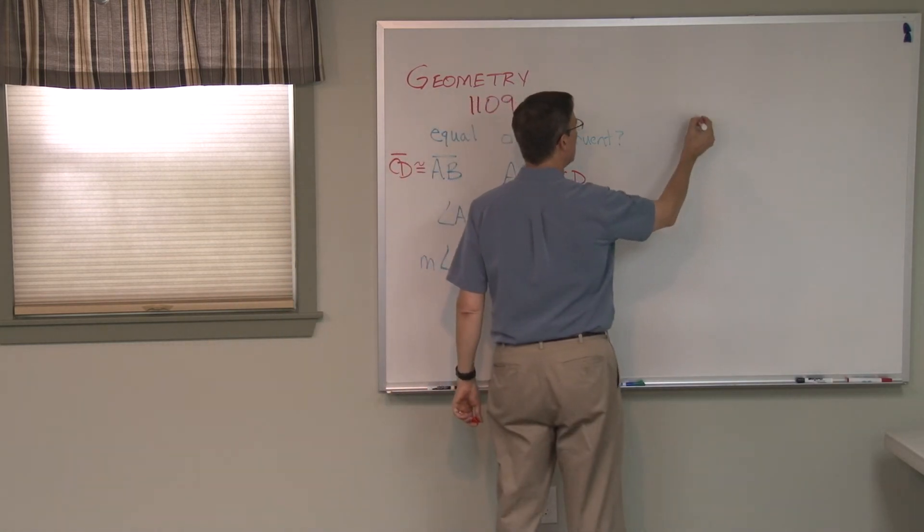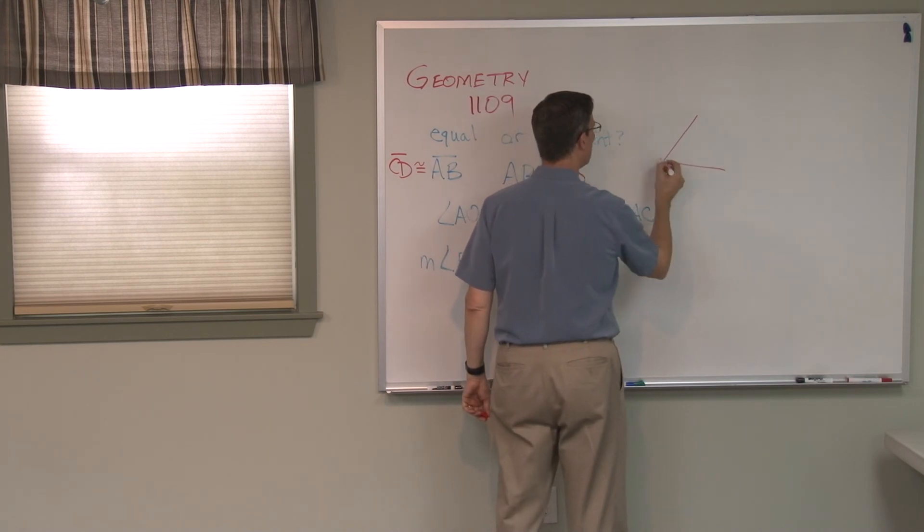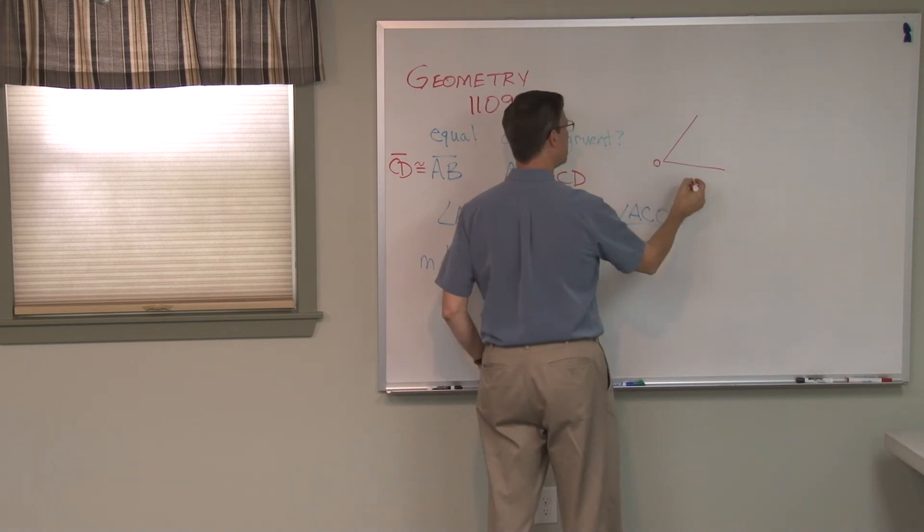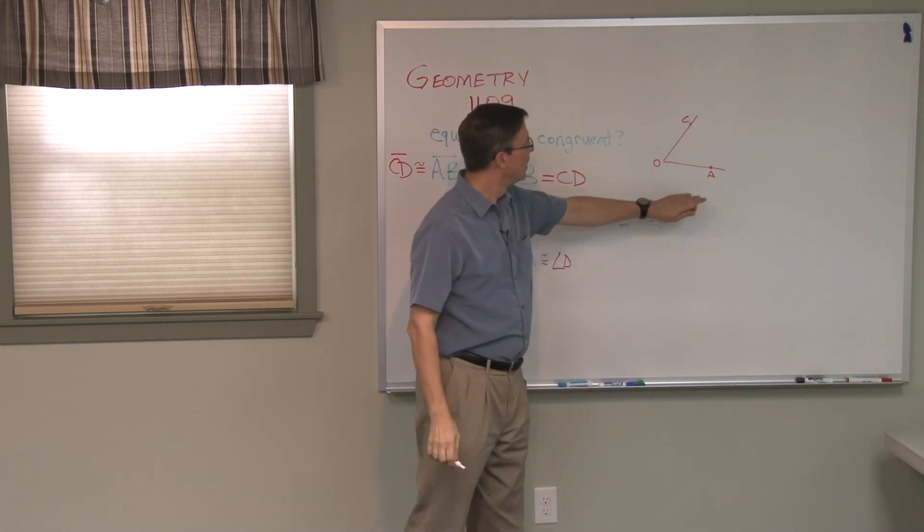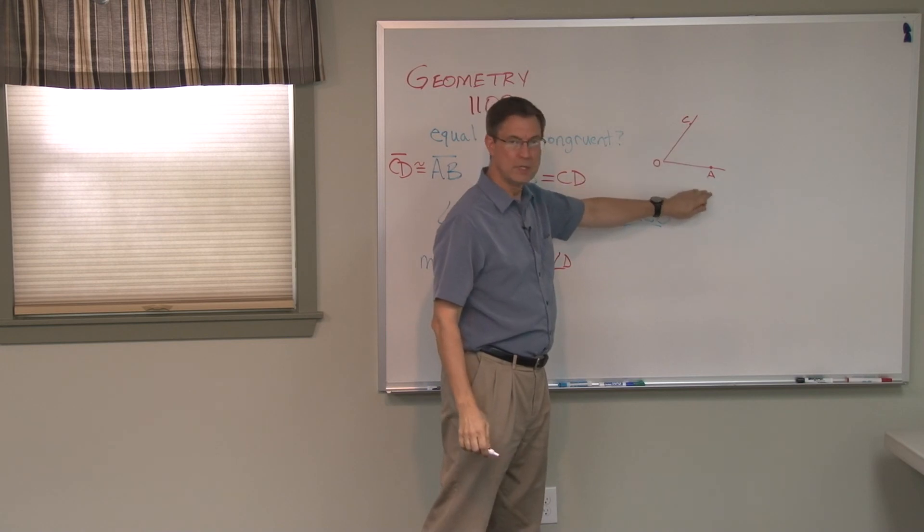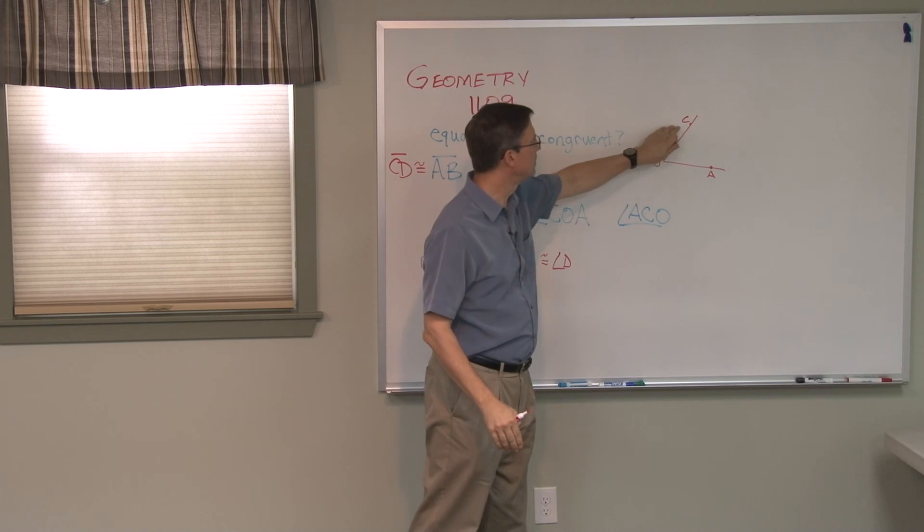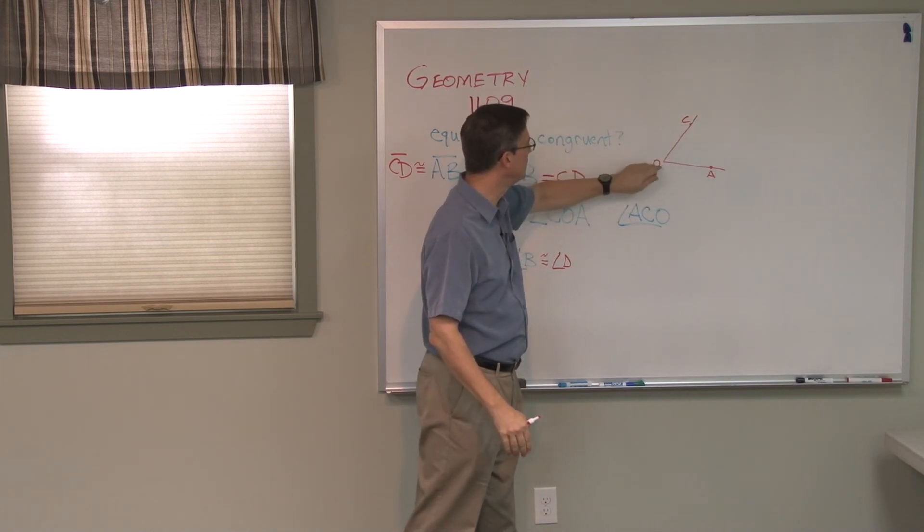So I can use either of these as the name of one side and call it angle AOC, or I could call it angle COA, and that's fine. Either one is naming the same angle, which is this space in between these lines.